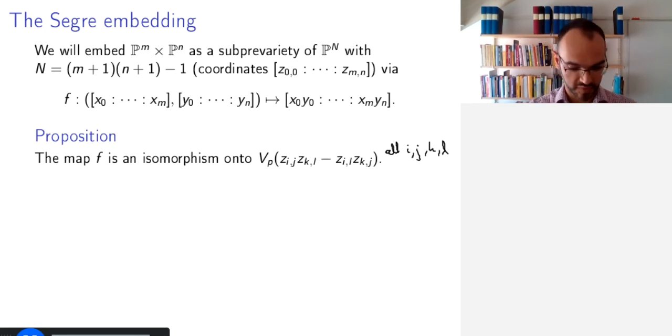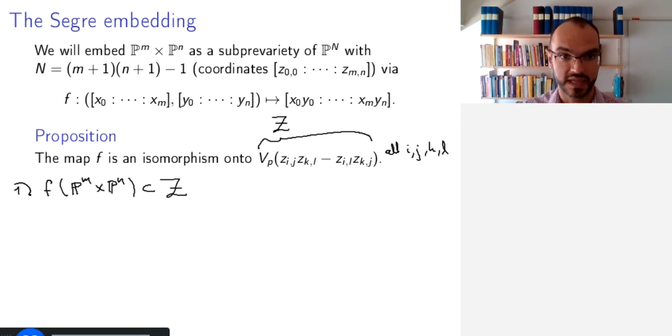So how do we prove this? Well, first, the well-definedness and algebraicity of this map are somehow clear, so we'll just prove that the image is exactly this zero set. We want to prove that f of P^M times P^N sits inside this set, which for brevity I will call Z. And this is clear simply by definition of how the map is done.